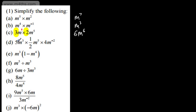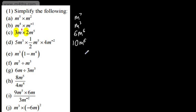Here we've got 5 times one-half times 4. 5 times 4 is 20, divided by 2 is 10, so multiplying the numbers gives us 10. We've got m cubed, m to the power of 5, and m to the power of minus 2. 3 plus 5 is 8, minus 2 gives us 6, so that gives us m to the power of 6, making the answer 10m to the power of 6.